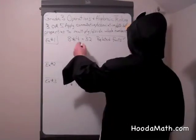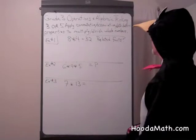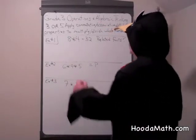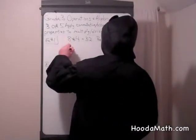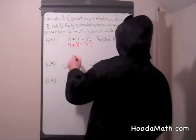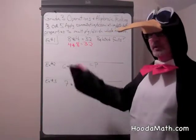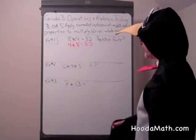Now when we know 8 times 4 is 32, we can get a whole family of related facts. We can say that means 4 times 8 equals 32. We're using the commutative property of multiplication, just switching the order of the factors.